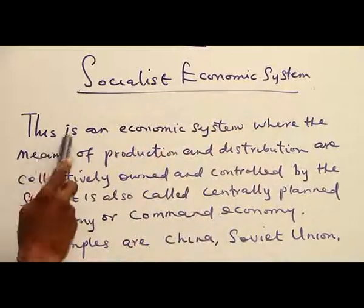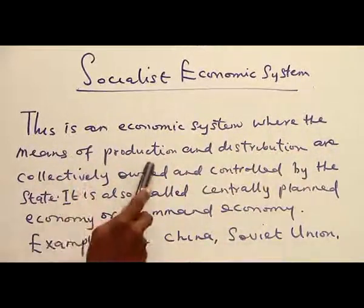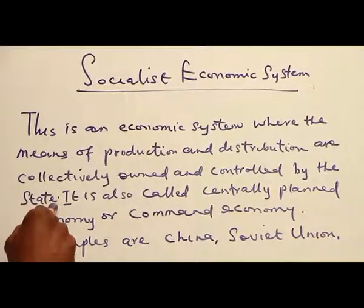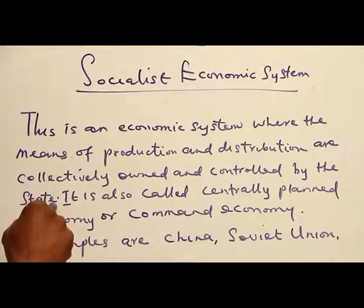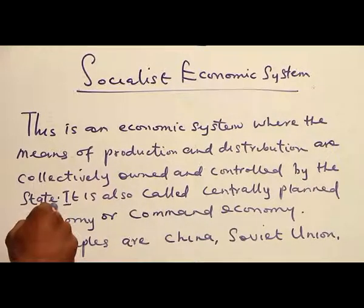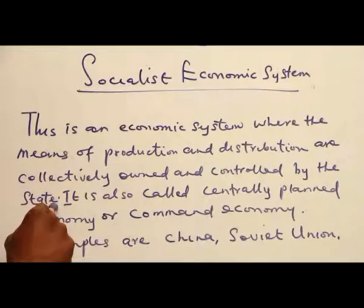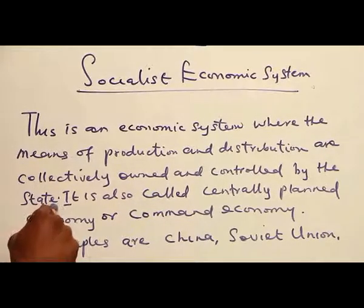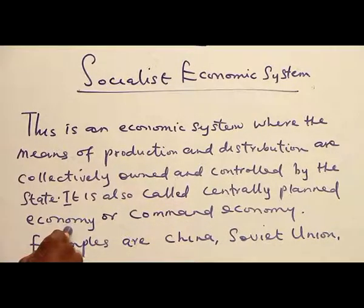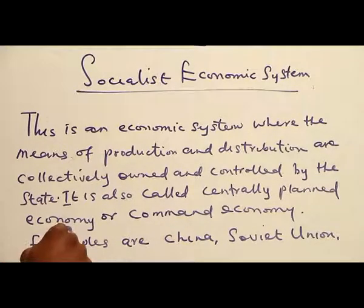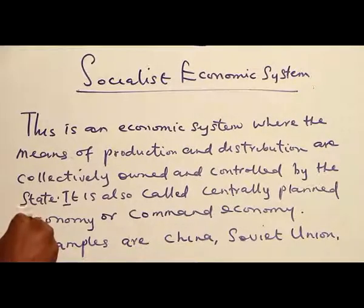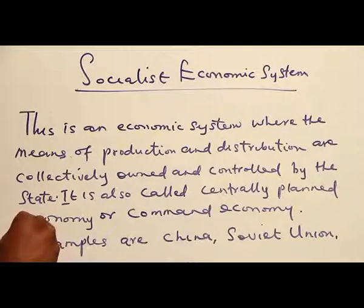Socialist economic system is an economic system where the means of production and distribution are collectively owned and controlled by the state. In terms of ownership of resources, distribution, and production — all these are done by the state, that is, the government. Government is the one in control and all resources belong to the government. We can also call the socialist economy a centrally planned economy, or command economy, where the economy is commanded by the state.